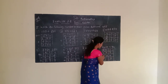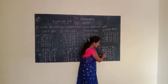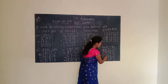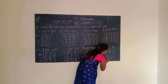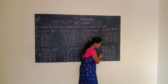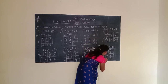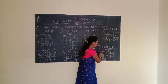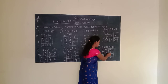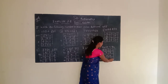Next, move to the tens place. Tens place is having 6 and 2. 6 plus 2 is 8. We have to write 8. Next, move to the hundreds place. Hundreds place is having 4 and 5. 4 plus 5 is 9. We have to write 9. Given number is 463 plus 524 equals 987.